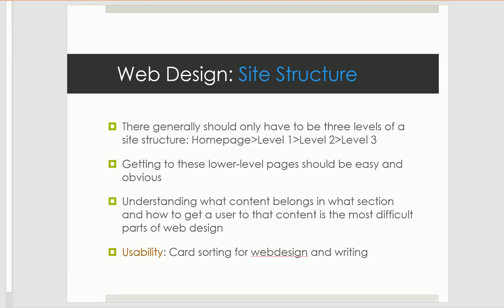Another key part of website design is general site structure — how pages are linked to one another. A good rule of thumb is that you should be able to reach any internal page from the homepage in three clicks or under. You should be able to predict what content will be in what section under what links, and links should be clear. In usability testing, to redesign website structure, we often use a method called card sorting, where the web designer provides subjects with a list of topics and asks them to categorize and group those topics in whatever way feels right.